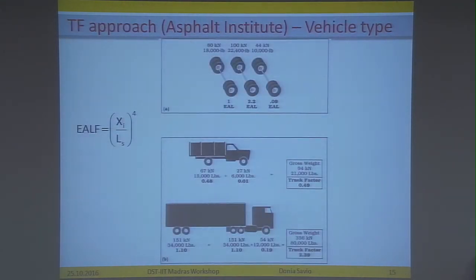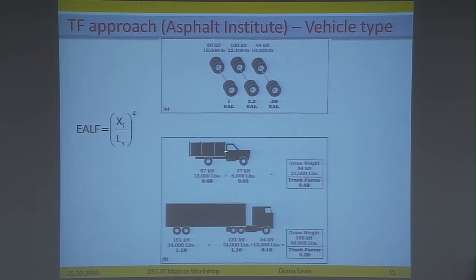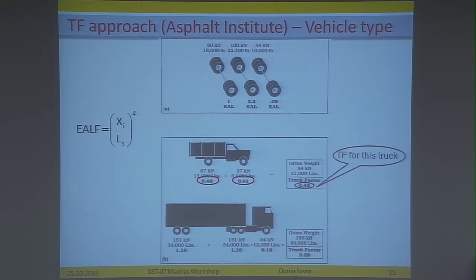In the truck factor approach, which is a vehicle type approach, we do not classify by axle type but classify the entire traffic data by vehicle type. For a typical Indian truck, we find the EALF for the rear axle and the EALF for the front axle, and adding them up we get the truck factor for that truck. The same process is repeated for all other truck types.